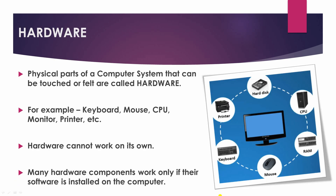Now what is hardware? See the image — printer, hard disk, CPU, RAM, mouse, keyboard, monitor — all these are hardware. Because the physical parts of a computer system that can be touched or felt are called hardware. For example, keyboard, mouse, CPU, monitor, printer, etc.